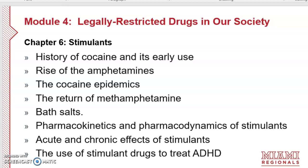In Chapter 6 on stimulants, we'll talk about the history of cocaine and its early worldwide use, the rise of the amphetamines beginning in the 1940s and 50s, the cocaine epidemics of the 1960s and 1980s and the resurgence of cocaine today, the return of methamphetamine, bath salts and their risks, the pharmacokinetics and pharmacodynamics of these drugs, and the acute and chronic effects of stimulants.